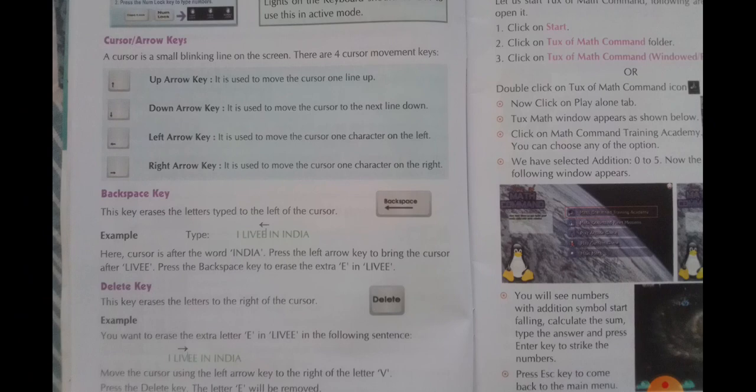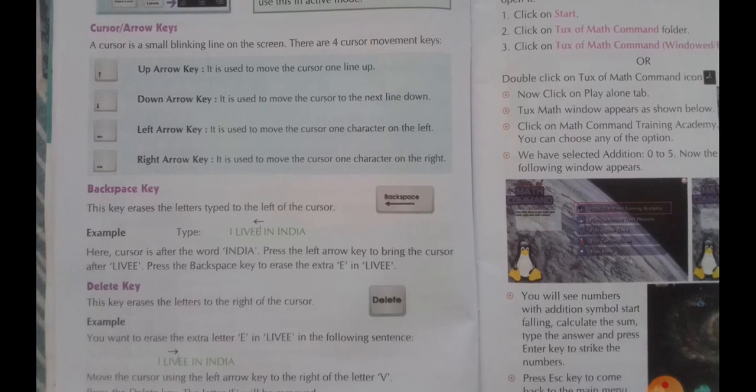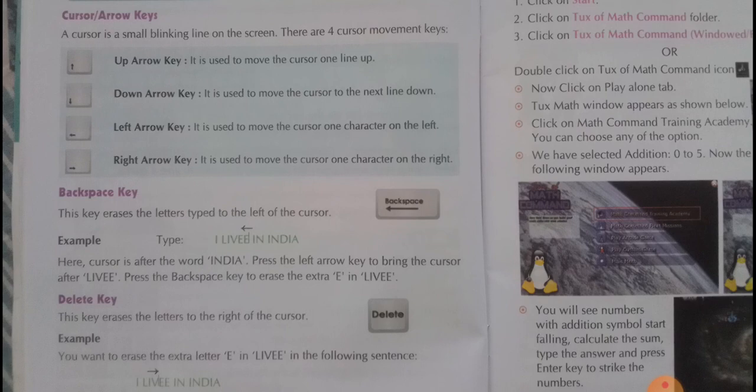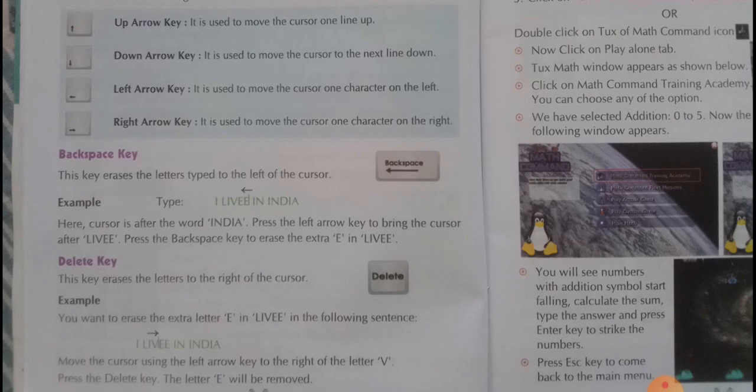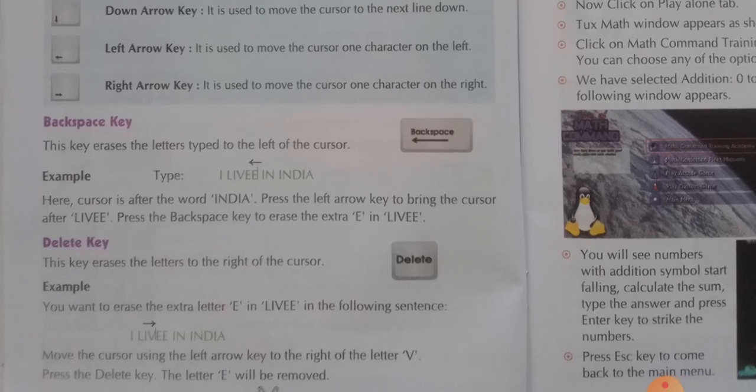Next, the backspace key. The backspace key is used to erase mistakes while typing. Whenever your mistake is on the left side of the cursor, you need to press the backspace key. The delete key is used when your mistake is on the right side of the cursor. Both backspace key and delete key are erasers while typing.